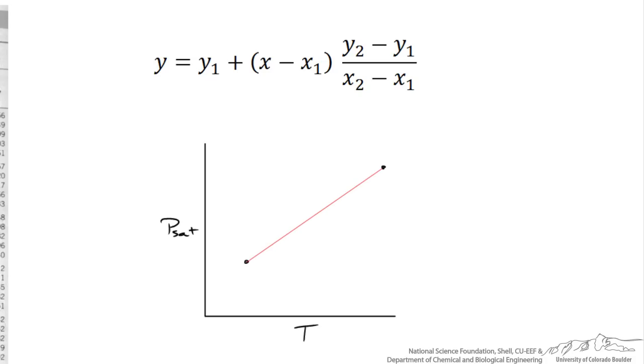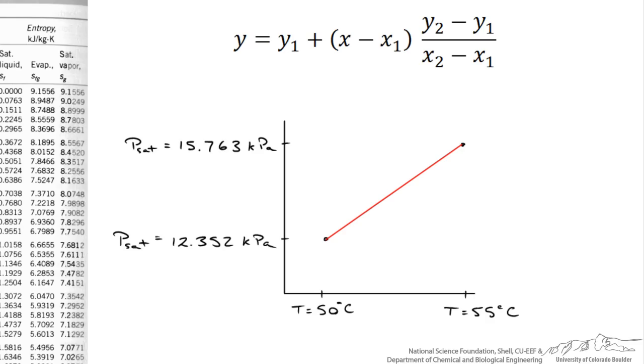We are going to assume a linear dependence between those two. So here are the two data points we have on the table. The saturation pressure is at 50 and 55 degrees C. We drew a line between it and we want to figure out what is the saturation pressure when T is equal to 53 degrees C. So 53 degrees C would be somewhere right here between the two. We want to figure out what is P sat at this location.